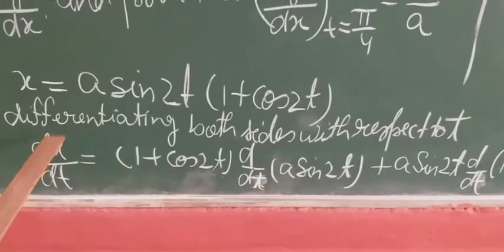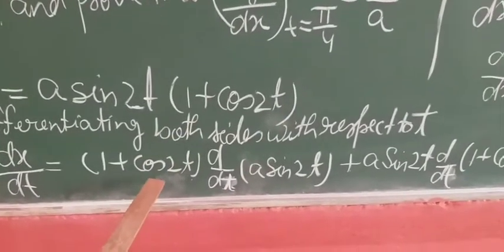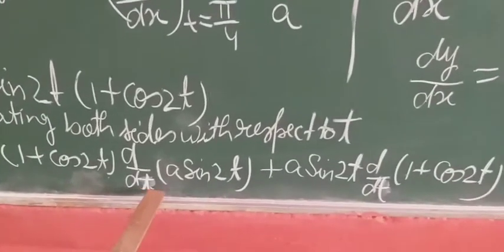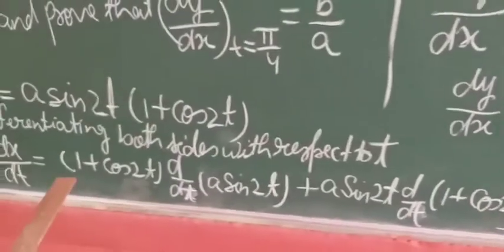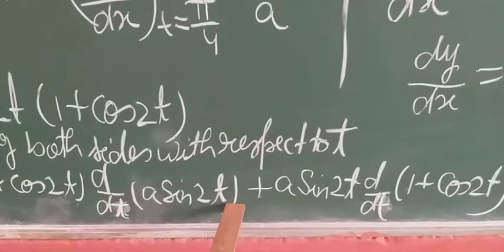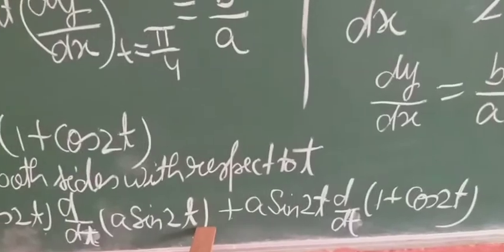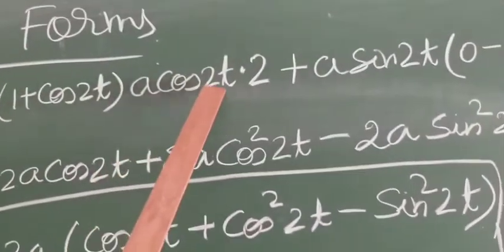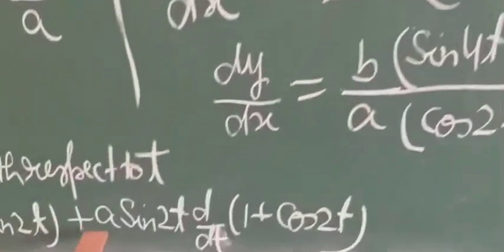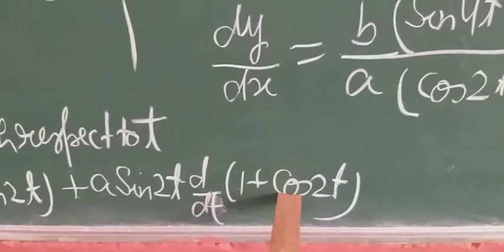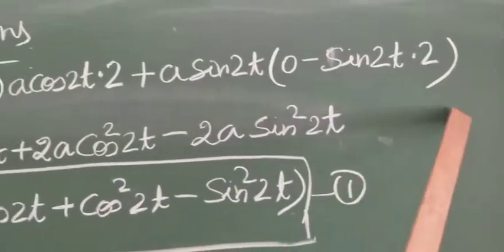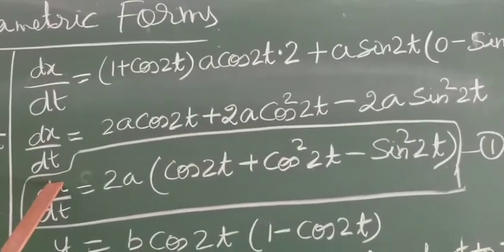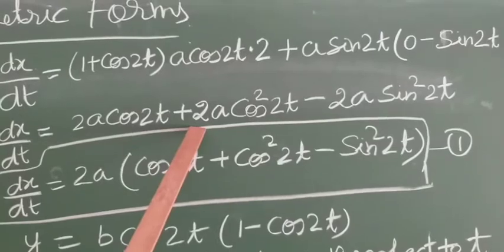Applying the product rule: dx/dt equals (1 + cos2t) times the derivative of a·sin2t with respect to t, plus a·sin2t times the derivative of (1 + cos2t). The derivative of a·sin2t gives a·cos2t·2, which is 2a·cos2t. The derivative of (1 + cos2t) gives 0 minus sin2t·2, which is −2·sin2t. So dx/dt equals 2a·cos2t·(1 + cos2t) + a·sin2t·(−2sin2t).